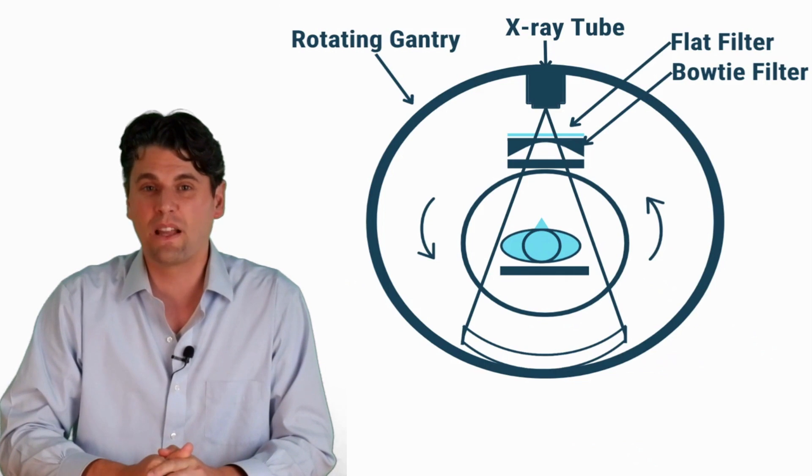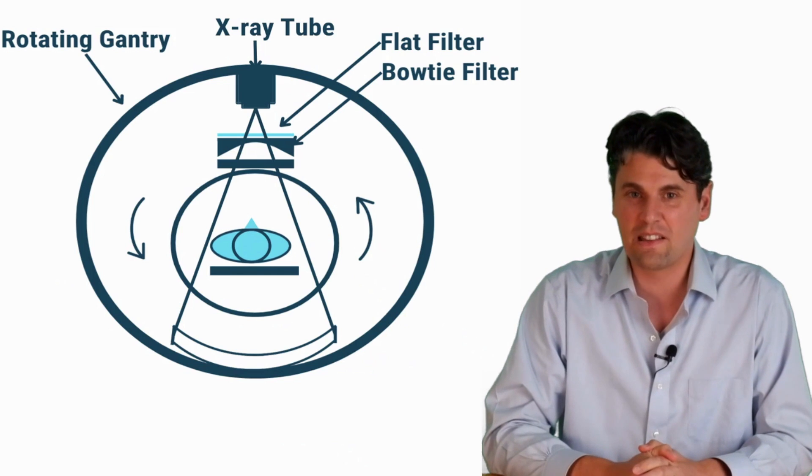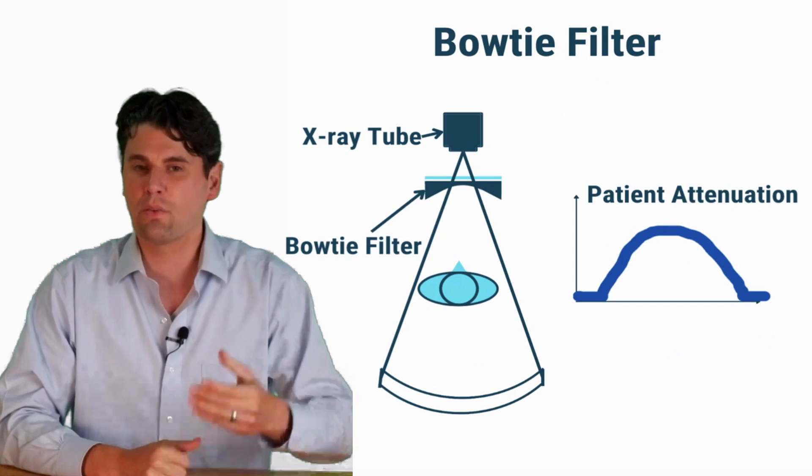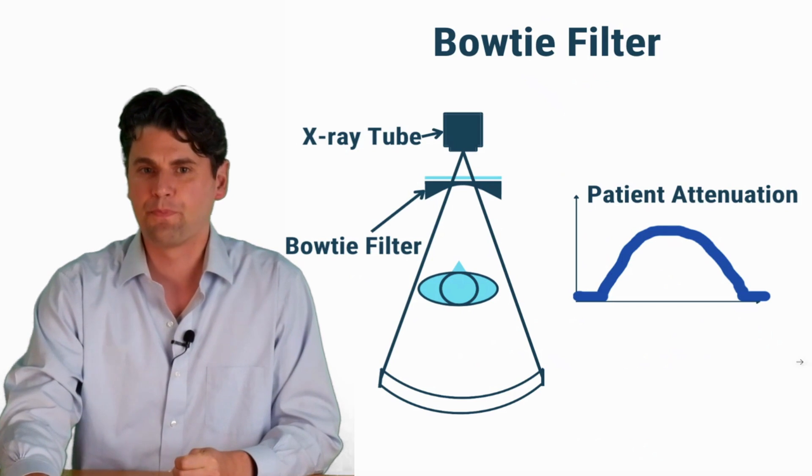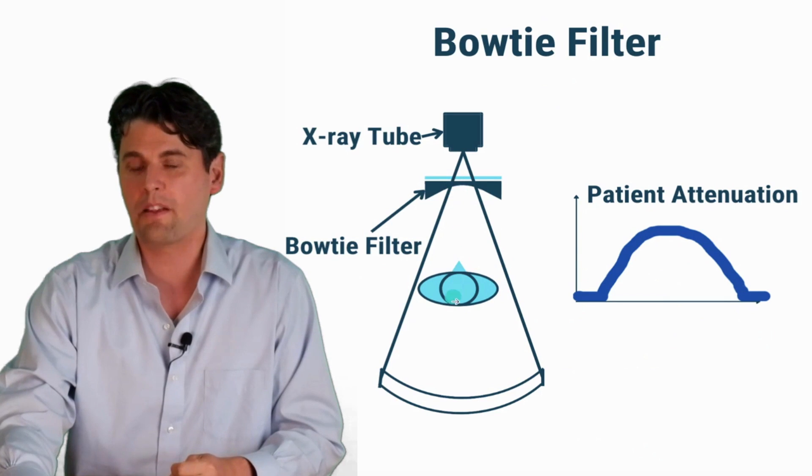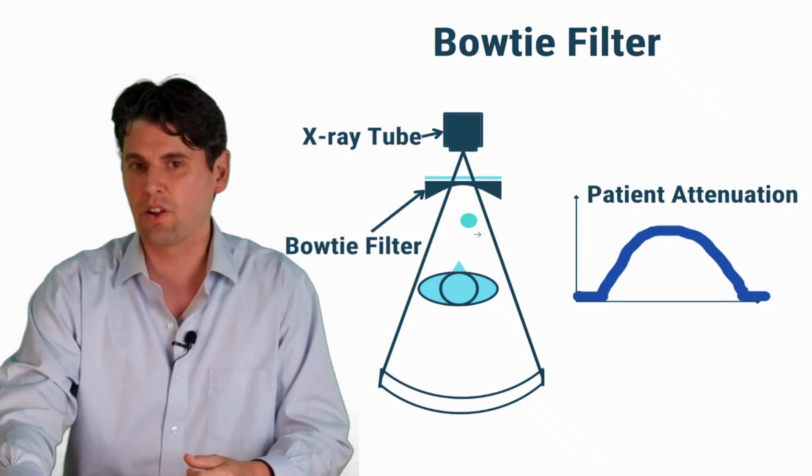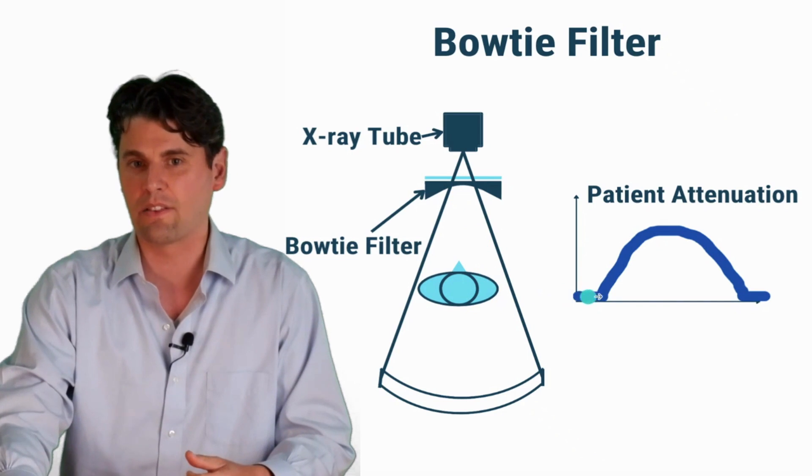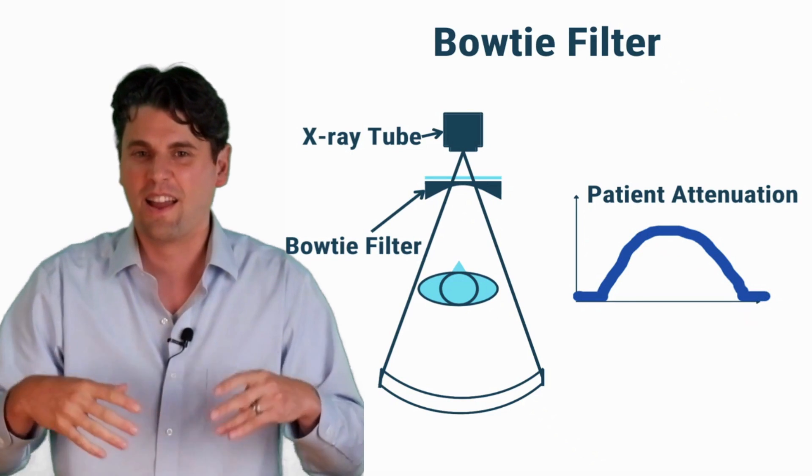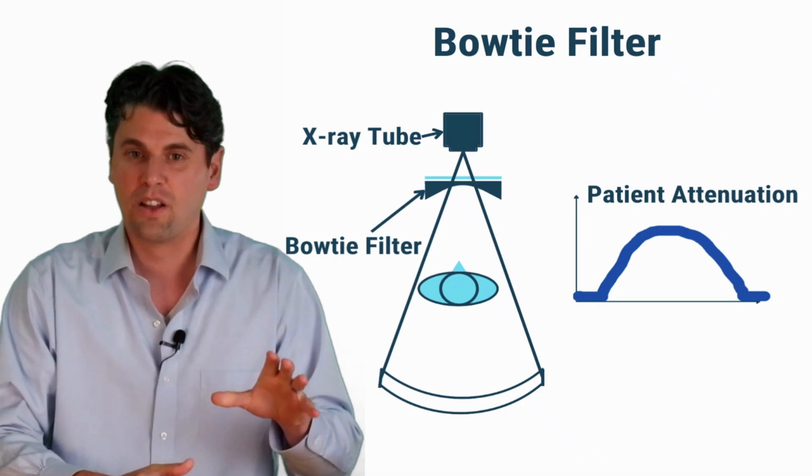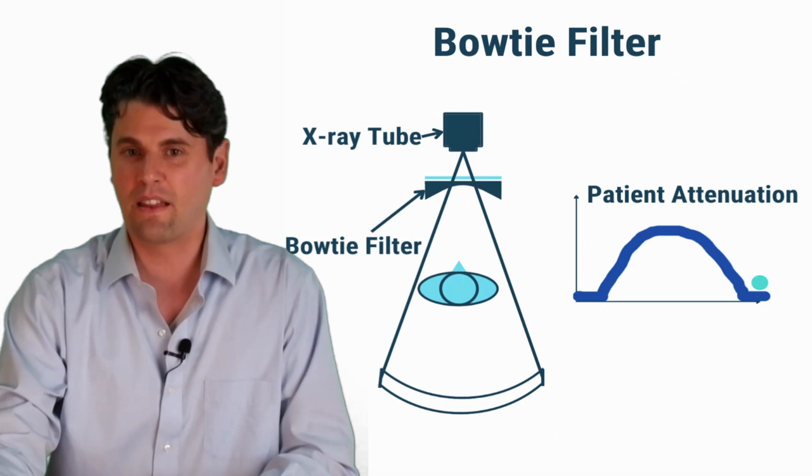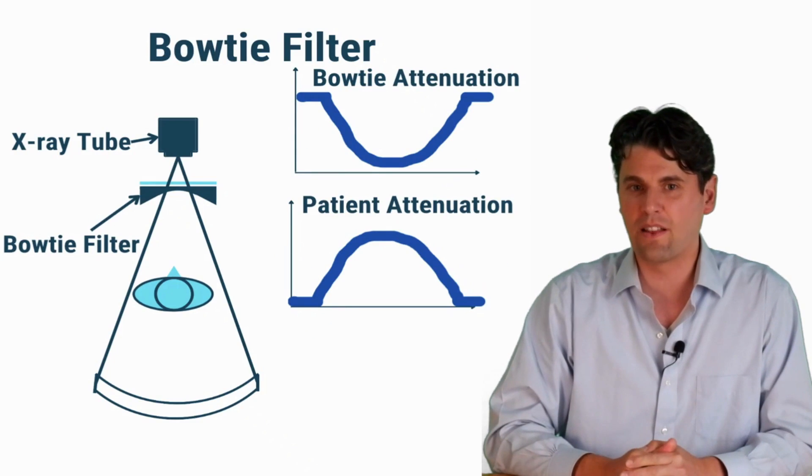Another kind of filter that's very common is what we call a bow tie filter. We call it a bow tie filter because of its effective shape. Imagine you didn't have this kind of a bow tie filter. Your x-rays would pass through the body and as they pass through the body you can see that on the outside they're actually passing through less material than on the inside. Typically you're going to be passing through more material on the inside and less material on the outside so you would get a shape that looks something like this.